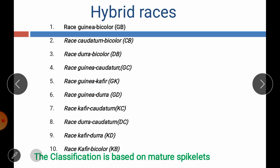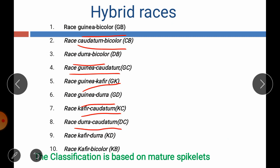The 10 hybrid races are: guinea-bicolor, caudatum-bicolor, dura-bicolor, guinea-caudatum, guinea-dura, kafir-caudatum, dura-caudatum, kafir-dura, and caudatum-bicolor. This classification is based on the mature spikelet.